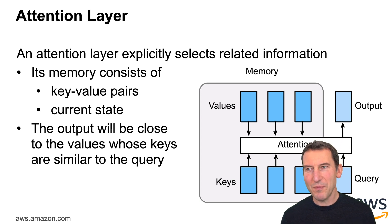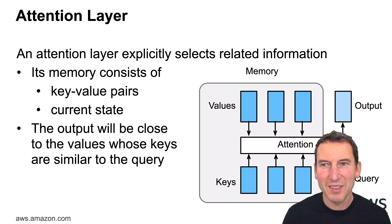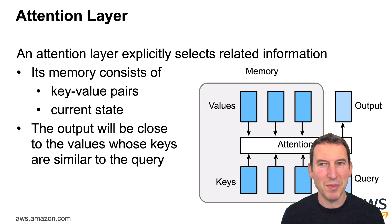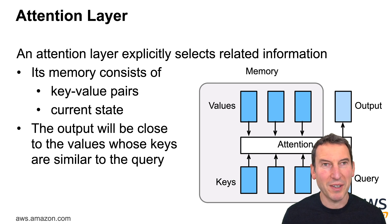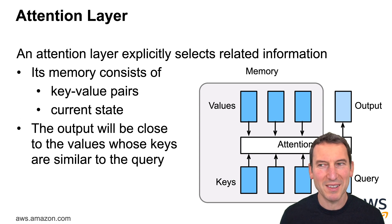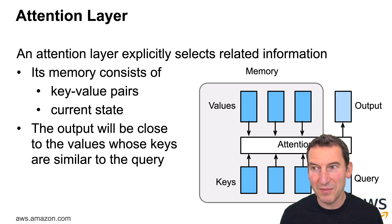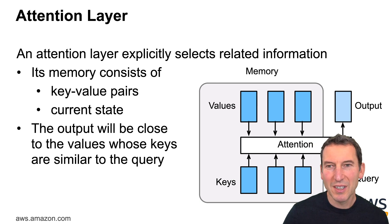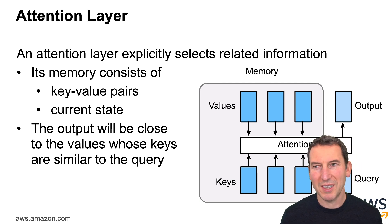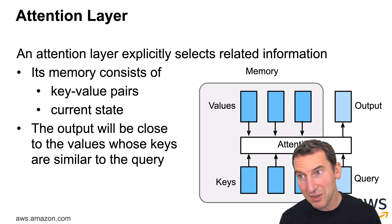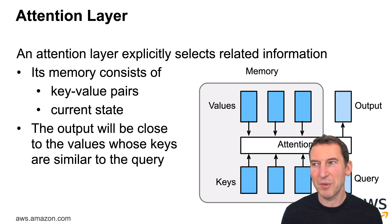The attention layer explicitly selects related information. It basically has a memory that consists of key-value pairs. The keys are used for a query; the values are what you use to retrieve — that notion comes from databases and other things. In some cases keys and values are the same thing. You basically have a current state, you use that to query which of the key-value pairs and in which weighted combination you pick, and then you use that weighted combination to give you the appropriate output.